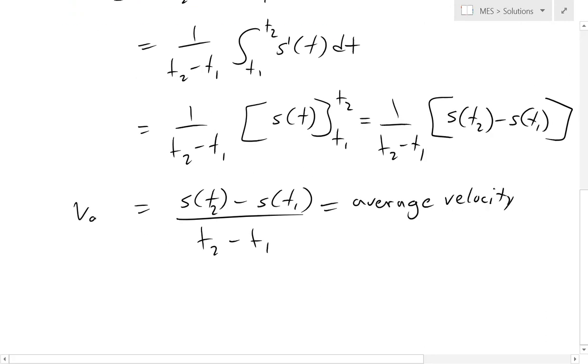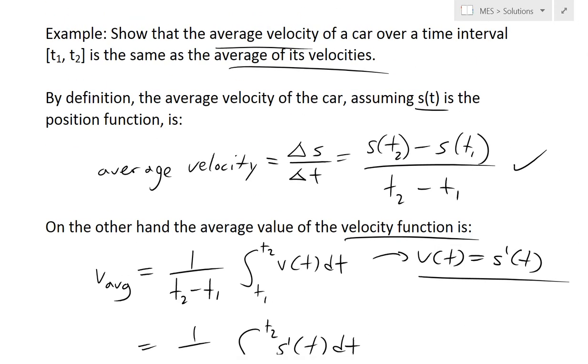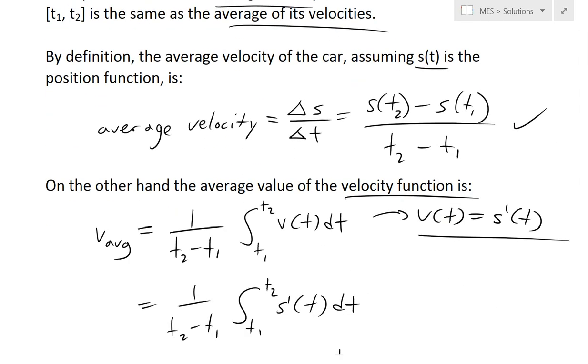So v average or the average of the velocity function or velocities is equal to the average velocity definition. So that's what I just wanted to show you. That's the same thing. You could find the average velocity in both ways.